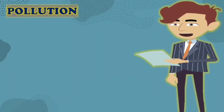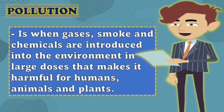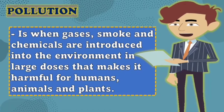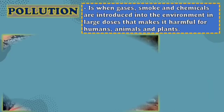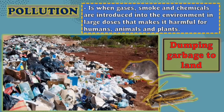Let's discuss furthermore about this. First on the list is pollution. What is pollution? It is when gases, smoke, and chemicals are introduced into the environment in large doses that make it harmful for humans, animals, and plants. There are different types of pollution: land pollution, water pollution, and air pollution. All of these greatly contribute harmful effects to our nature. For example, dumping of garbage on land has bad effects on the environment. If this happens, pests and other animals may live there and carry germs and bacteria which are dangerous to human health, and the land will be polluted.